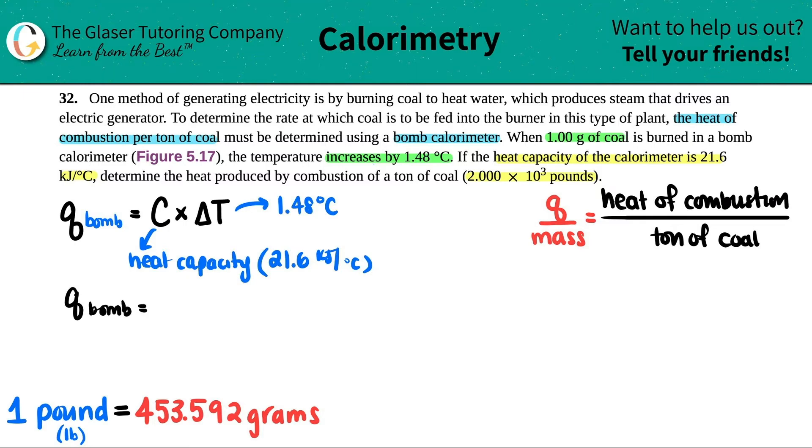So all I got to do is just take 21.6 multiplied by 1.48. Let's see, 21.6 times 1.48. And I get the heat of the bomb, and that's 31.968 kilojoules.